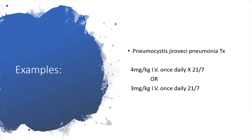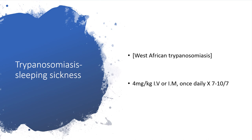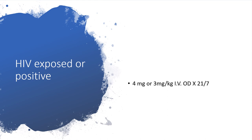Dosing examples: For Pneumocystis jirovecii pneumonia treatment, you can give 4 mg/kg intravenously once daily for 21 days, or 3 mg/kg intravenously once daily for 21 days. In HIV-exposed or HIV-positive individuals for prophylaxis, you can give 4 mg/kg or 3 mg/kg intravenously once daily for 21 days, or once daily for 7 to 10 days depending on indication.